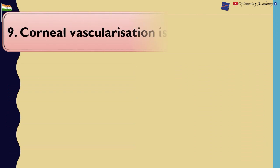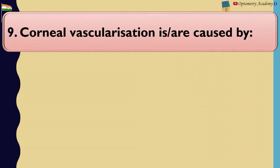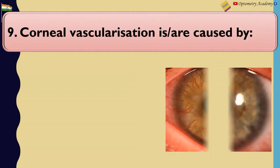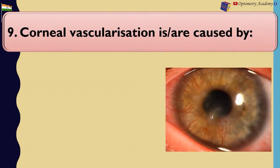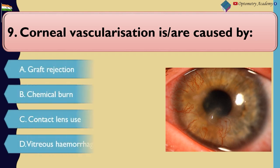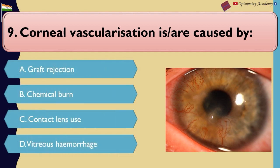Corneal vascularization causes are caused by: A. Graft rejection. B. Chemical burn. C. Contact lens use. D. Vitreous hemorrhage.